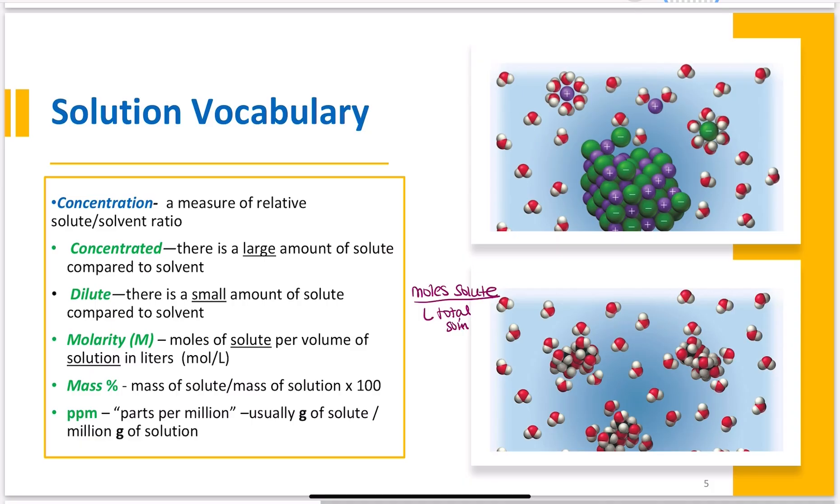The reason it's stated like that is because it means the solvent and solute volume added together in liters. We also have mass percent - the mass of the solute divided by the mass of solution times 100. And PPM, parts per million, is usually grams of solute per 1 million grams of solution. Just some different terms you may see.